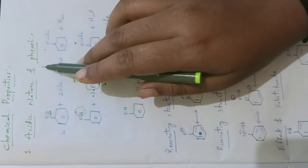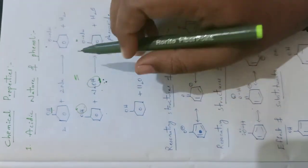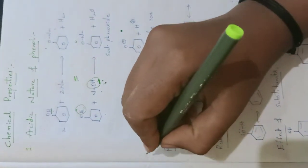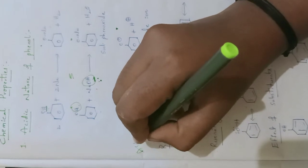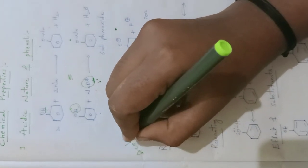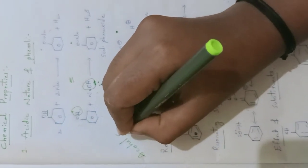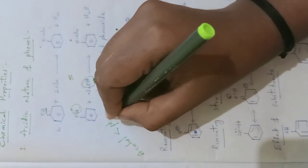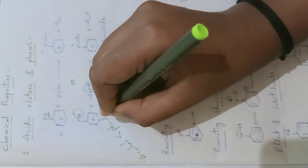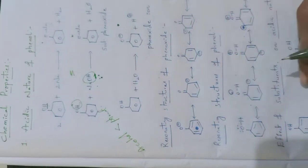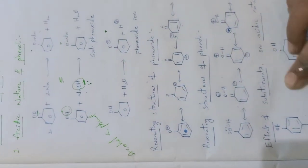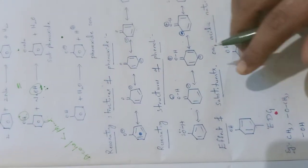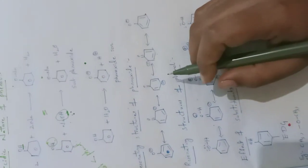The acidic nature of phenol is very high when compared to alcohol — alcohol's acidic nature is less than phenol's. This is due to only one reason: phenols can participate in resonance.